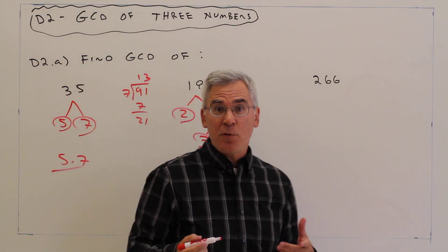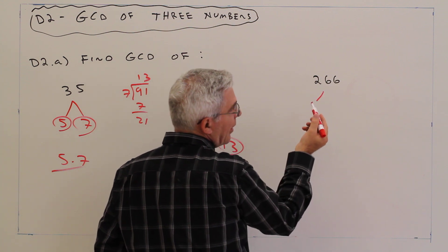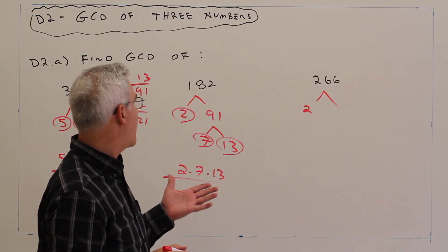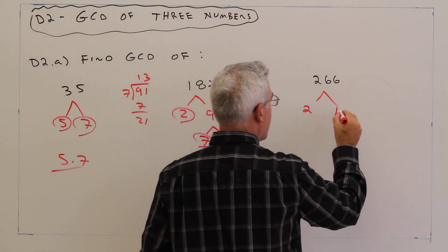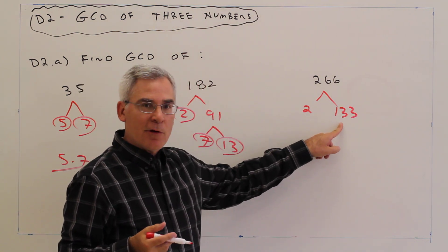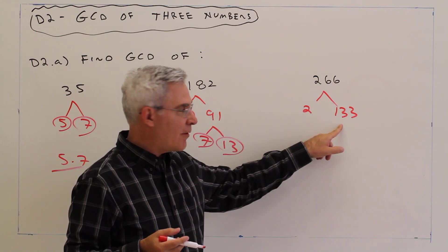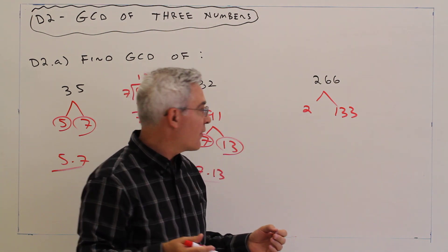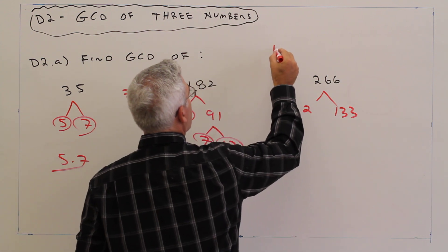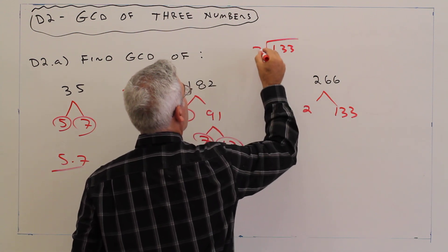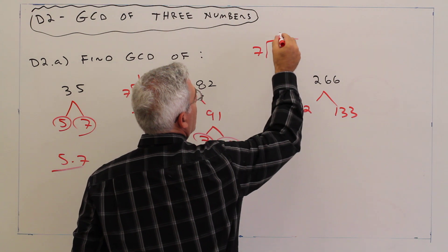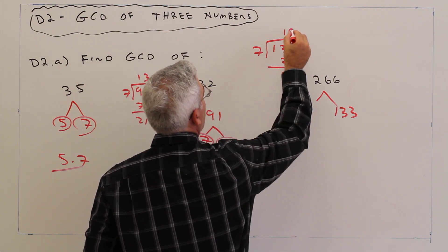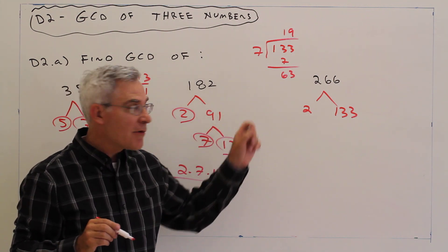And then for 266, I know 2 goes in there: 2 and 133. Okay, 2 doesn't go into that. Sum of digits, 3 doesn't go in. 5 doesn't go in. Okay, let's check 7. Oh, 7 does go in there.